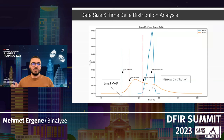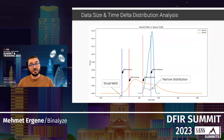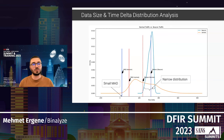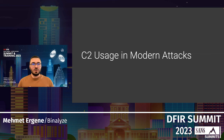As a final example, the white line represents beaconing traffic — it has a narrow distribution and a MAD close to zero. The orange line is normal traffic — it has a wider distribution and a much higher MAD, somewhere around 100 based on the graph. Now that we know how to calculate these metrics and find beacons, let's talk about how C2 is used in modern attacks.